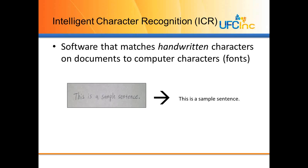The next type of recognition software is ICR. ICR matches handwritten characters on documents to computer characters or fonts. Here we have a piece of paper with the words 'this is a sample sentence' handwritten on it. ICR takes those handwritten characters off the document and turns them into actual text that can be used any way we want it. ICR is similar to OCR, but it's focused on that handwritten text.